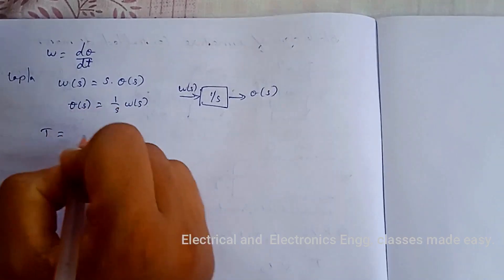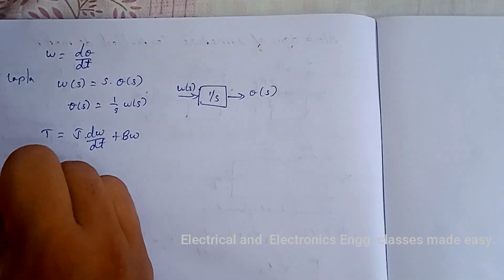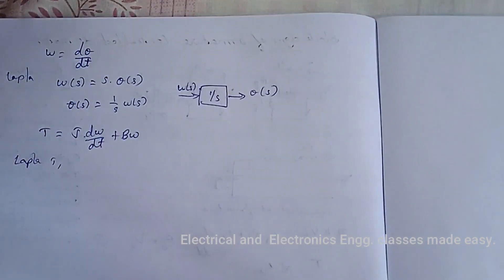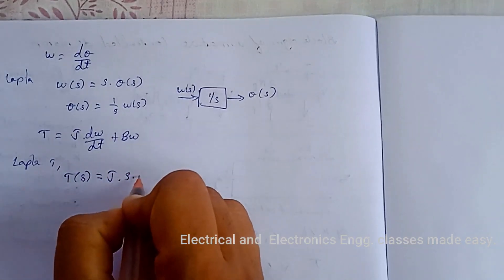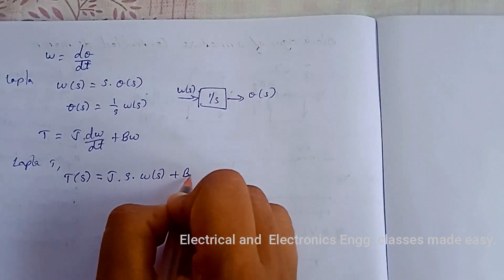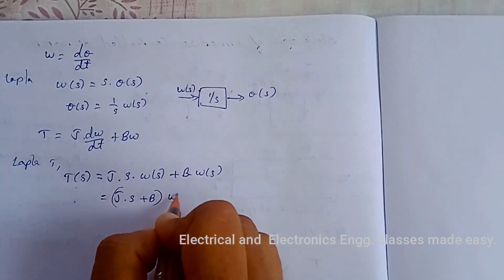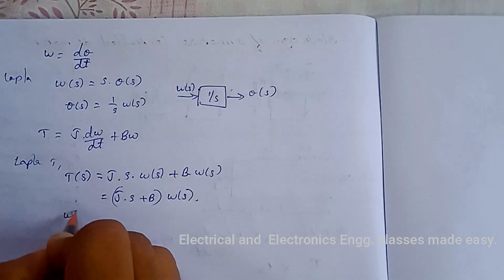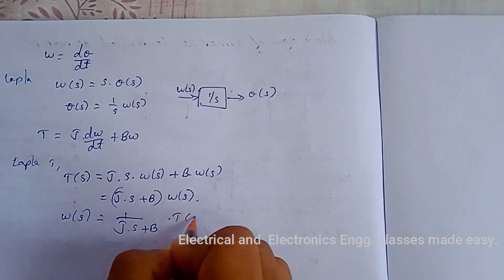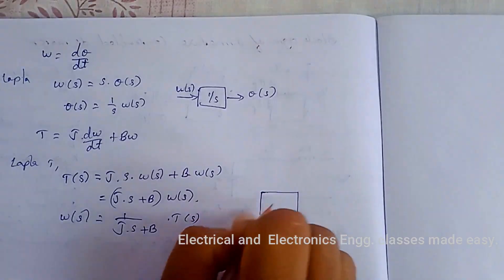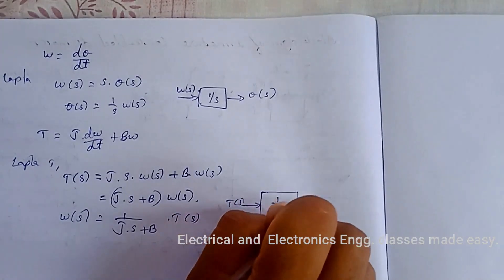The fourth equation is T = J·(dω/dt) + B·ω. Taking the Laplace transform gives T(s) = J·s·Ω(s) + B·Ω(s) = (Js + B)·Ω(s). Rearranging: Ω(s) = 1/(Js + B) · T(s). The block diagram has transfer function 1/(Js + B), with input T(s) and output Ω(s).